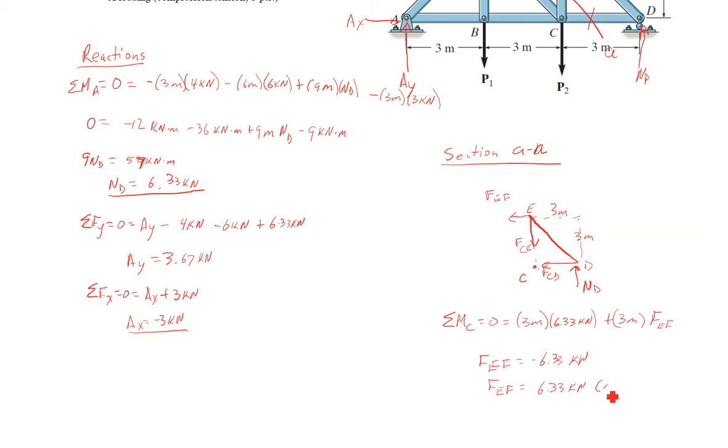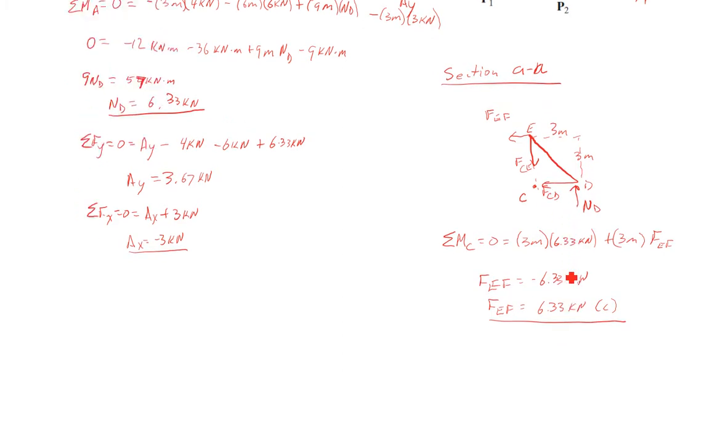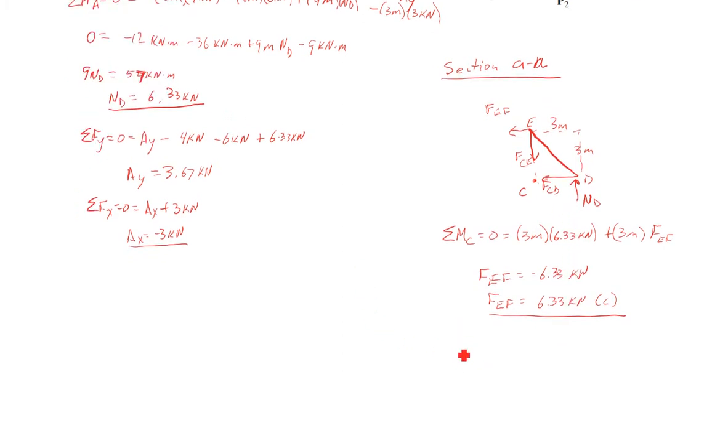So FEF equals negative 6.33 kilonewtons. 6.33 kilonewtons in compression. I drew it in tension. So when I found the negative, it means it's in compression. Alright. So I've got one of those. I can also use this free body diagram to find FCD. So now I can do the sum of the forces in X direction. So I have negative CD and I have negative FEF. And that's all my X directions. So FCD equals negative FEF, which is going to be negative 6.33 kilonewtons. So I kept the sign convention I had up here and put in my negative answer. So FCD, 6.33 kilonewtons in tension.